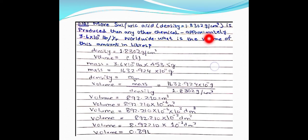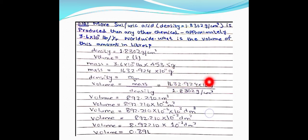More sulfuric acid is produced than any other chemical. Given the density of sulfuric acid and a mass in pounds, we need to find volume in liters. First, convert the mass from pounds to grams using the factor 1 lb = 453.5 g. For 3.6 × 10¹¹ lb, multiply by 453.5 g/lb to get mass in grams, then use V = mass / density to find volume.